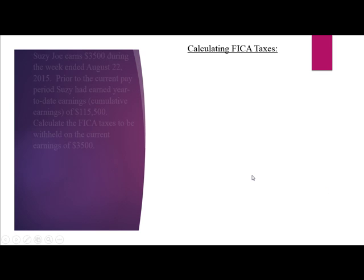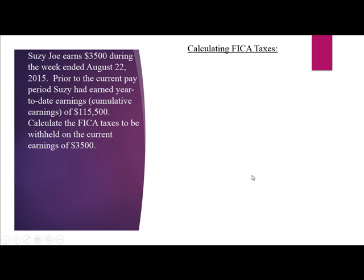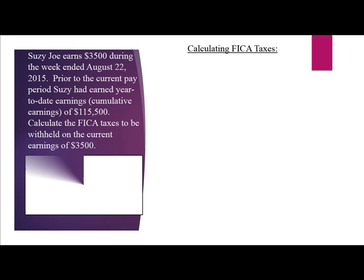Another example of calculating FICA taxes. Susie Jo earns $3,500 during the week ended August 22, 2015. Prior to the current pay period, Susie had earned year-to-date earnings of $115,500. Calculate the FICA taxes to be withheld on the current earnings of $3,500. The facts: weekly pay $3,500, year-to-date earnings $115,500, pay period ending August 22, 2015.